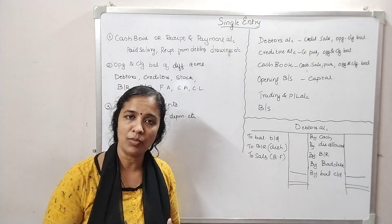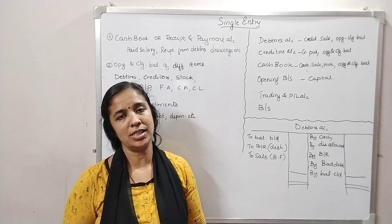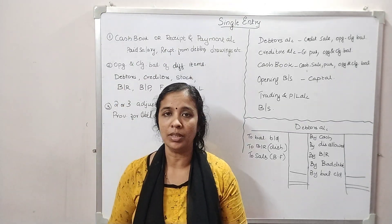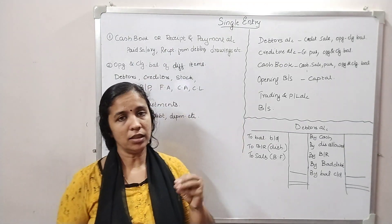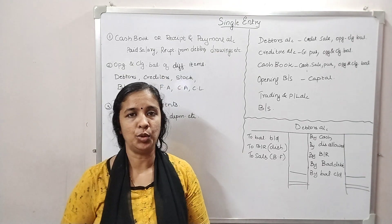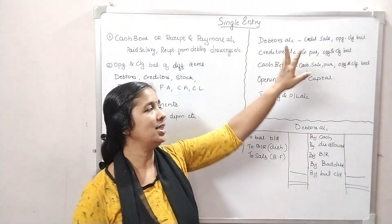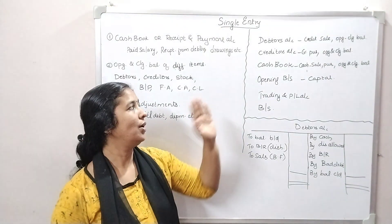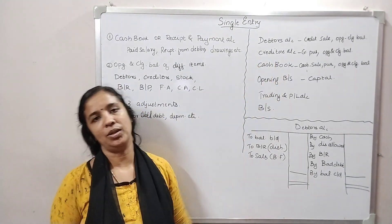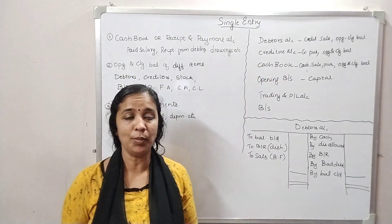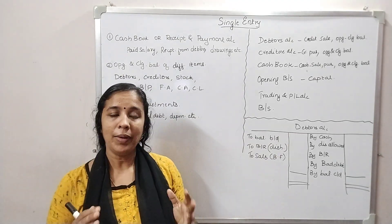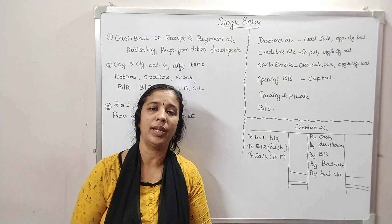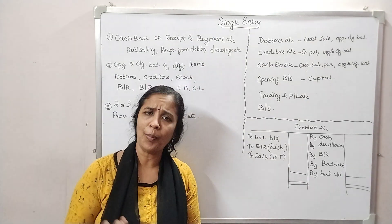If you have the opening balance of debtors and the closing balance of debtors, along with cash received from debtors, we will be able to get the balance of the debtors account. We are also preparing for creditors and for credit purchases. The main thing is the credit purchase.